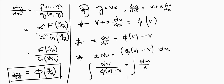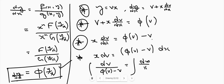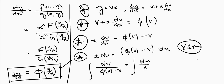First step is substitution. Second step is substituting this value in the differential equation. Third step is taking v to the RHS. Last step is using the variable separable method. Let us now discuss some problems based on this.